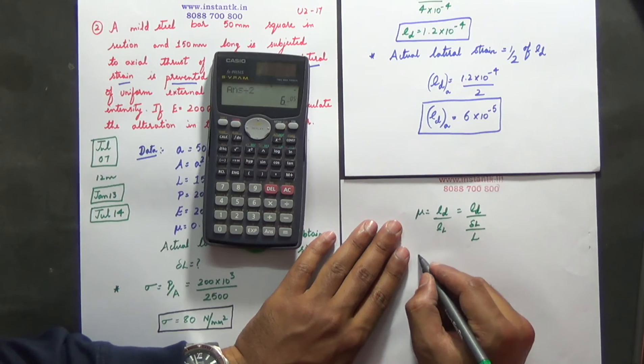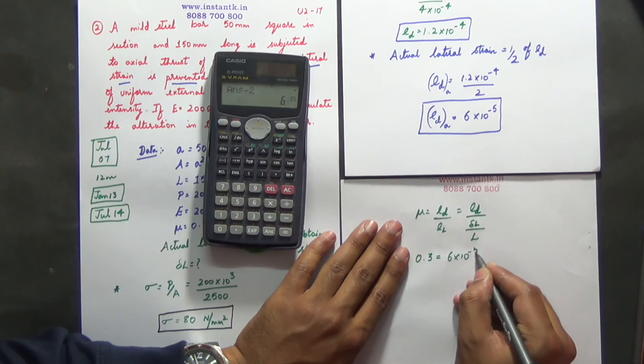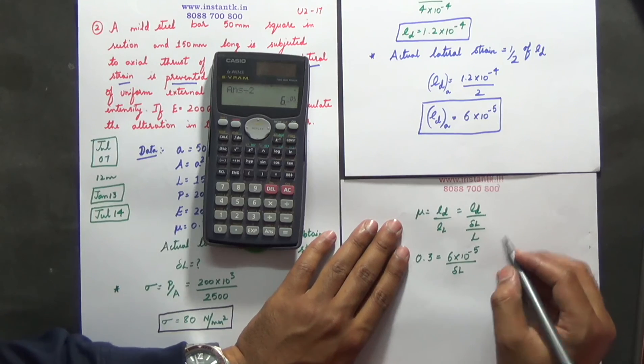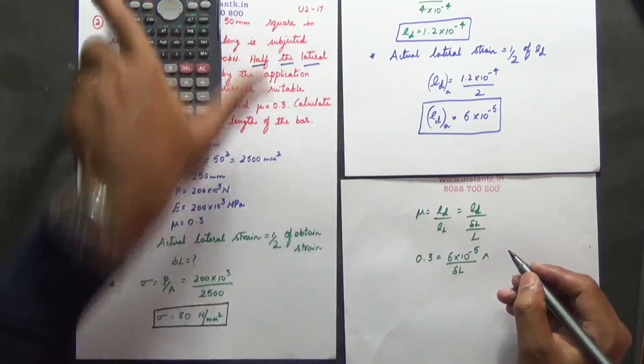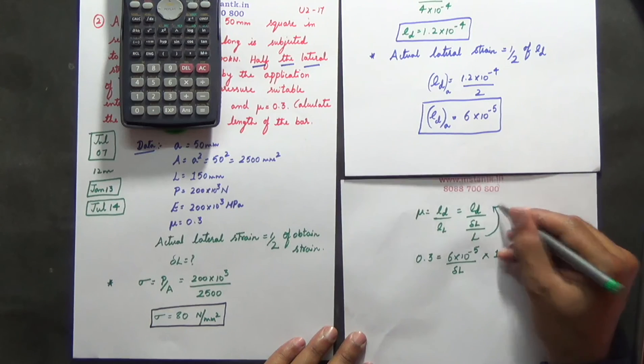So substitute the value. Mu is 0.3 is equal to 6 into 10 power of minus 5 divided by delta L into what is L? L is equal to 150 because this L moves up.